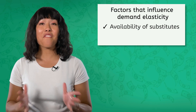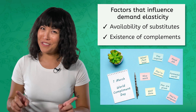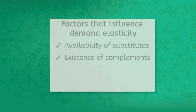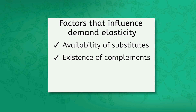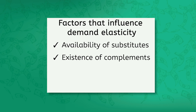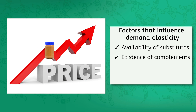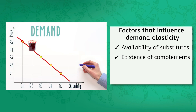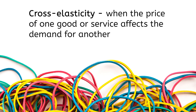Next, we have complements — not that kind of compliment. You looked at complements in an earlier lesson. They are related goods that go together, like peanut butter and jelly, for example. What happens to the demand for jelly if the price of peanut butter goes way up? It will probably go down. We call this effect cross-elasticity, when the price of one good or service affects the demand for another.